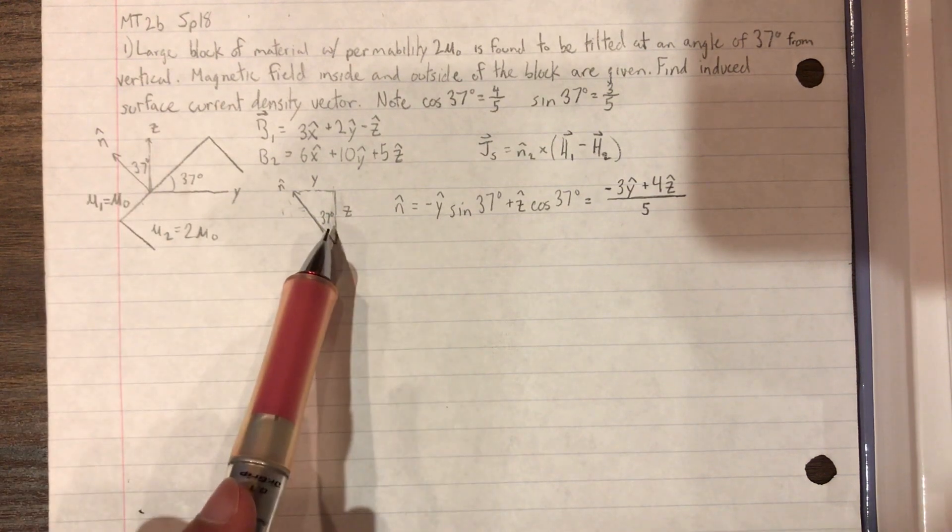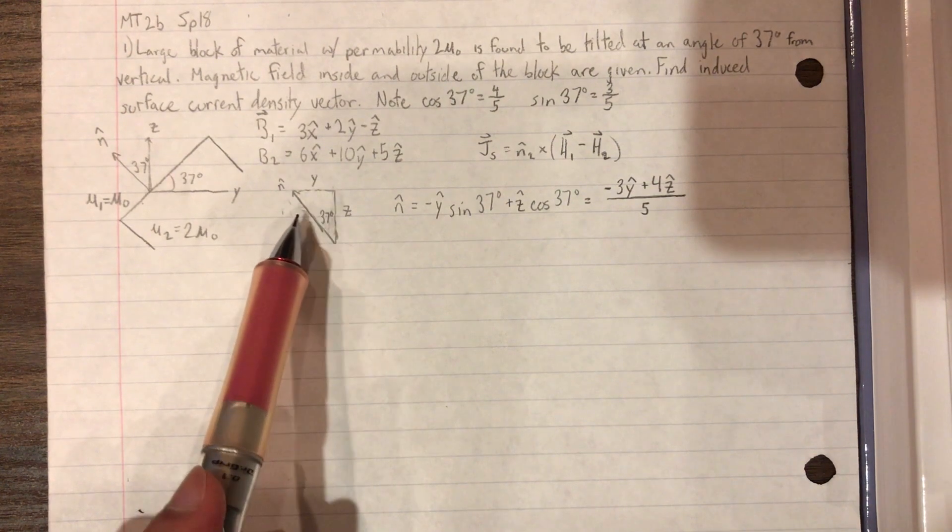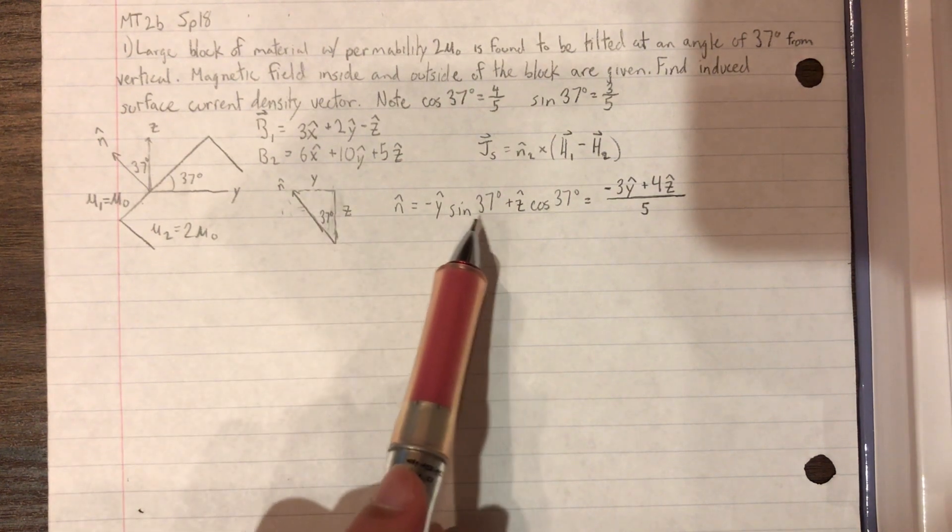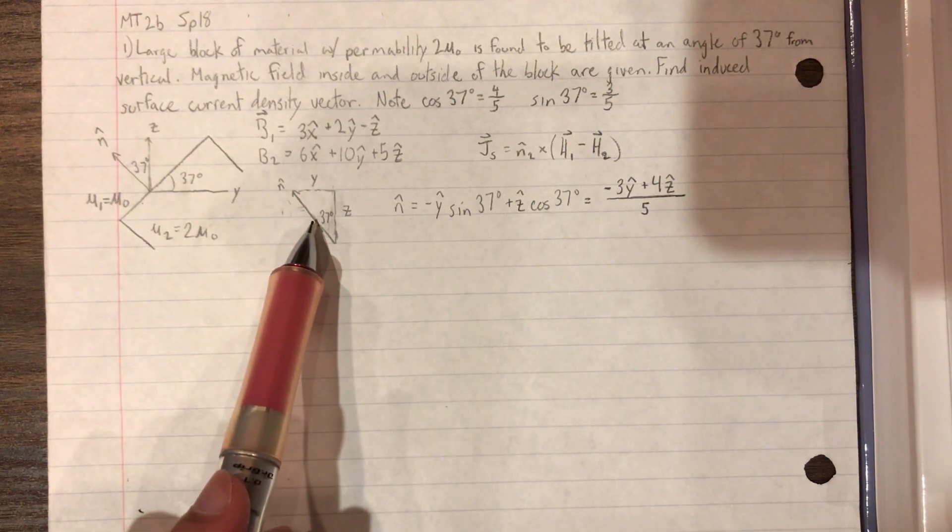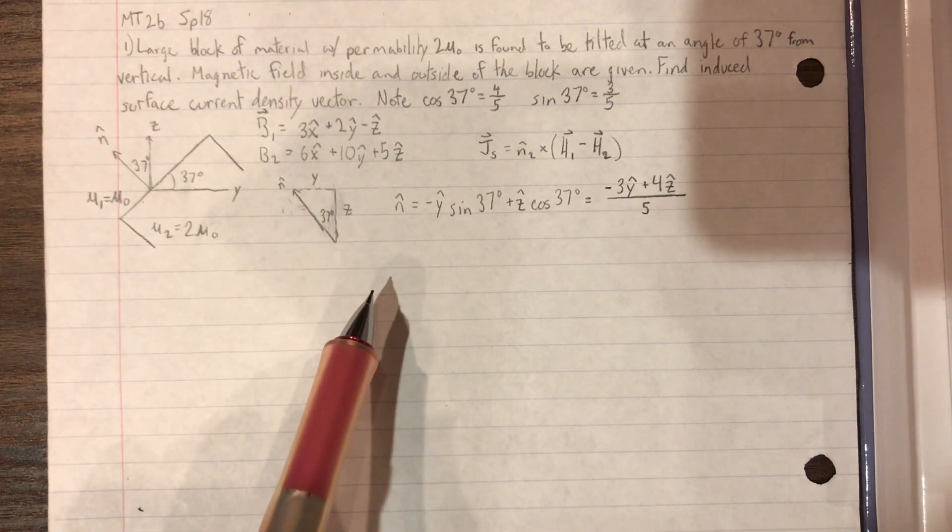So sine opposite over hypotenuse is the Y, so it's sine 37. Z is cosine, so adjacent over hypotenuse, so cosine 37.